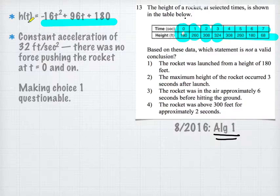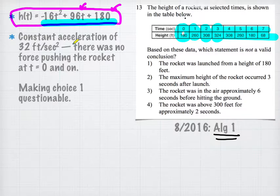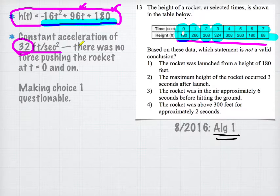This equation is perfectly fine. Initial height was 180 feet, and initial velocity was 96 feet per second. At t = 0, velocity was 96 feet per second, and gravity is constant acceleration throughout — a constant 32 feet per second squared. So there is no additional force pushing the rocket at or after t = 0. Only the acceleration we saw was 32 feet per second squared, which is the constant gravitational acceleration. It seems quite feasible.